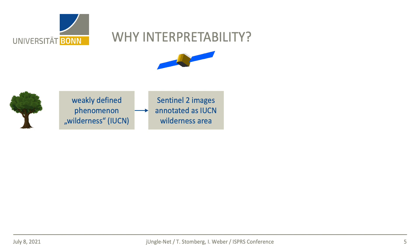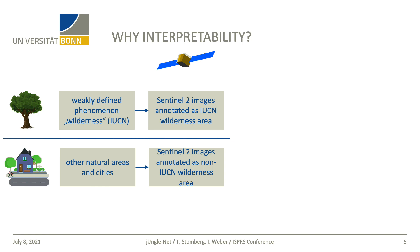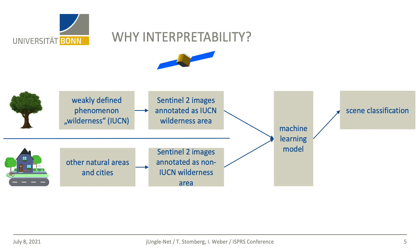And this is exactly the challenge: how can we learn something about a phenomenon that is only weakly defined? Well, at least we have access to IUCN wilderness data, since IUCN provides such data according to their definition, and we can export satellite images from Sentinel-2 within these areas. We can also export satellite images within non-wild natural areas and cities. Having both data in wild regions and data in non-wild regions, we can start training a machine learning model for scene classification.